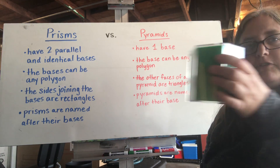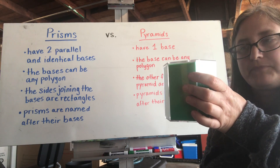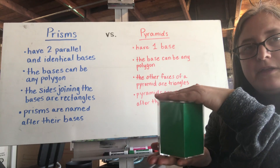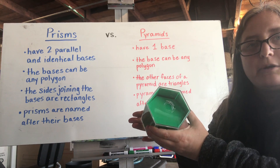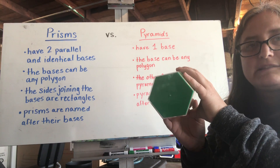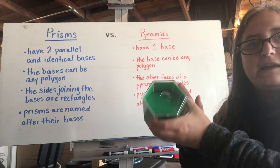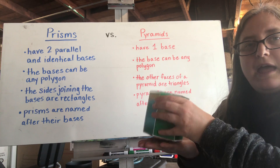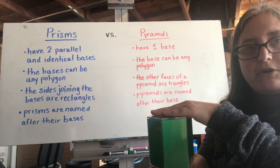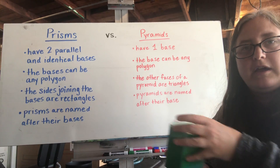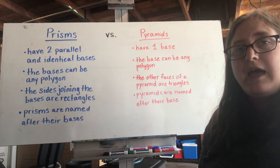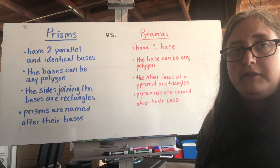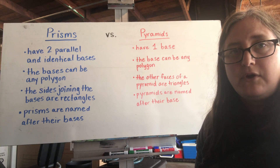Here's another prism. I've got a top and a bottom — they are identical, they are both hexagons, same size and shape, and they're parallel. So all prisms have two parallel and identical bases.